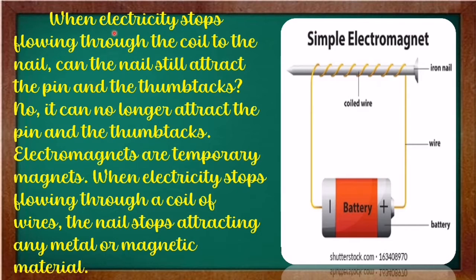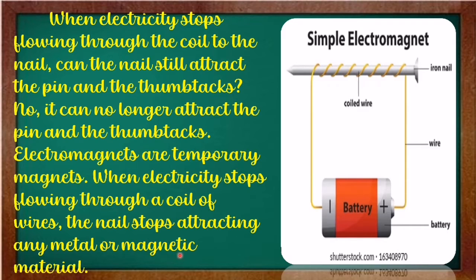When electricity stops flowing through the coil to the nail, can the nail still attract the pins and thumbtacks? No, it can no longer attract the pins and thumbtacks. Electromagnets are temporary magnets. When electricity stops flowing through a coil of wires, the nail stops attracting any metal or magnetic material.